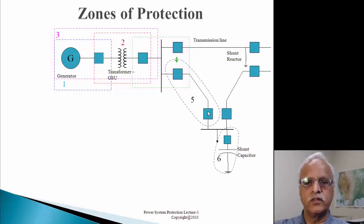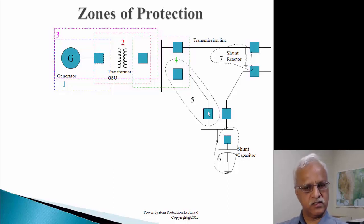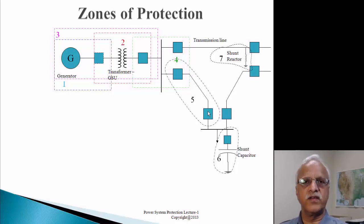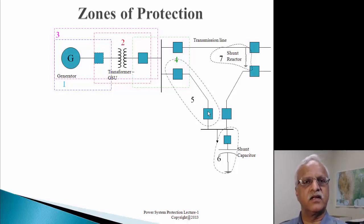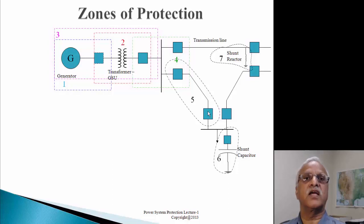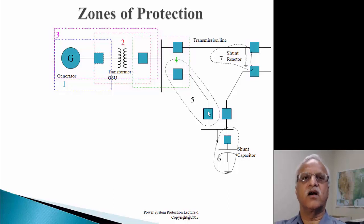We also have two reactive power devices: a shunt capacitor and a shunt reactor. Under heavy loaded conditions, voltage may fall outside the normal operating range, so we need reactive power to boost it back up. Under light load conditions with all transmission lines connected, there is a tendency for voltage to be higher than the normal acceptable range. Under such conditions, we put shunt reactors to pull the voltage down within normal operating limits.